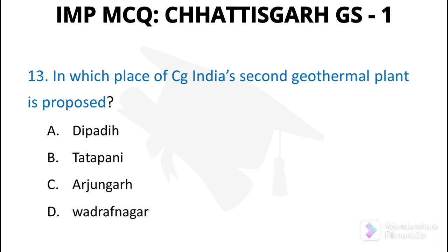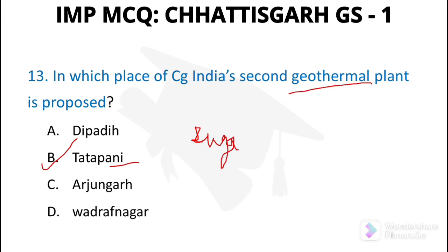Question number 13: In which place of Chhattisgarh is the second geothermal plant proposed? Tatapani is proposed in Balrampur Jila. The first geothermal plant in India is in Puga Valley, Ladakh.